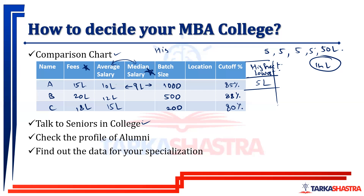Also check the profile of alumni. See where alumni from 5–6 years ago are now in their corporate careers — you can find this on LinkedIn. Look at when they did their MBA from that college and where they are now. Don't look at just one or two people — that's difficult to generalize. Talk to at least 3 or 4 seniors to get unbiased data. If one senior had a bad experience, they'll only say negative things; if someone got a great placement, they'll overly praise the college. So you need unbiased views from multiple seniors.